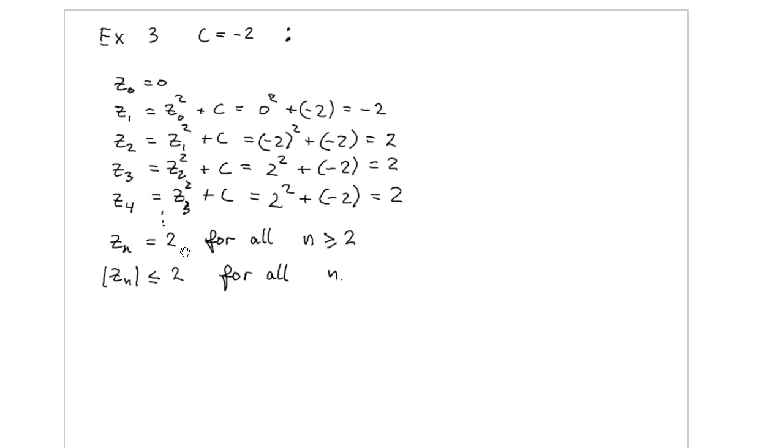So we obtain that z_n is equal to 2 for any value n larger or equal to 2. It's only the case when n is equal to 1 that we obtain something which is different from 2. In particular, we obtain that the absolute value of z_n is less than 2 for all n.